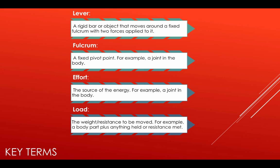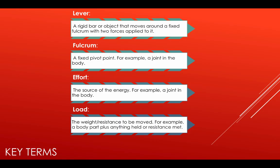Here are the key terms you need to know for levers within movement analysis. A lever is a rigid bar or object that moves around a fixed fulcrum with two forces applied to it. A fulcrum is a fixed pivot point — for example, a joint in the body. Effort is the source of the energy. And the load is the weight or resistance to be moved — for example, a body part plus anything held or resistance met.